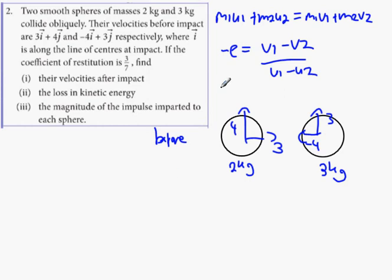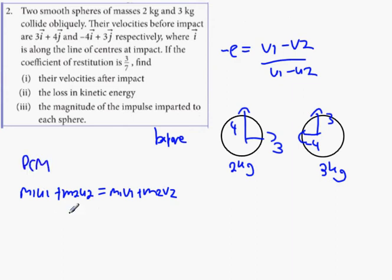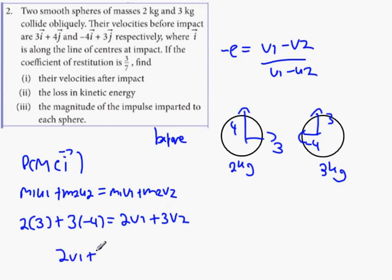Let's do PCM, which is here. PCM is M1U1. See this little I I put here? It means PCM along the I-axis only. You're not counting in the j-values at all. So it's going to be 2 times 3 plus 3 times minus 4 equals 2 times V1 plus 3 times V2. Therefore 2V1 plus 3V2 equals 6 minus 12, which gets us minus 6. There is one of your equations done.